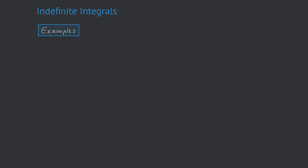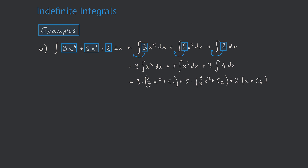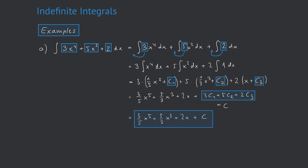Let's look at some examples. We start with a simple polynomial. We split up the integral into different smaller integrals according to the rules we just explained — first splitting the sum to get the sum of integrals of each expression, then pulling the constant factors in front of the integrals. We can now apply the rule for integrating powers of x. We create three separate constants c1, c2, and c3. Expanding and combining similar expressions, then combining the constants into one single constant C, we are done calculating the indefinite integral.